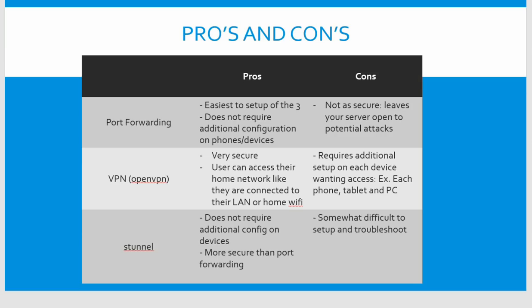You can also set up a VPN. VPNs are nice because they give you access to your network just like you're connected to your home Wi-Fi. The only problem is that it requires additional setup on every device — every phone, every computer, and every tablet — and you need to make sure the VPN is running at all times to connect to BlueIris.